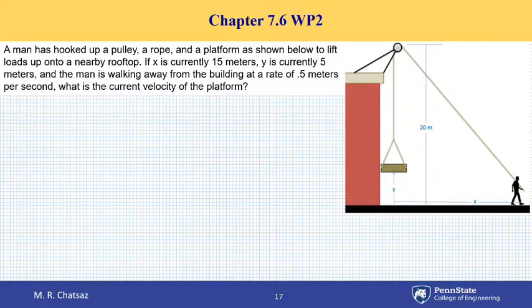So regardless of the details, recall how you want to approach a dependent motion problem. The basic idea is to take advantage of the fixed length of the rope and write a relationship in terms of the position variables, the variable positions.